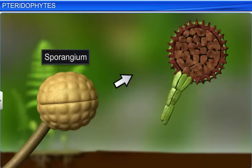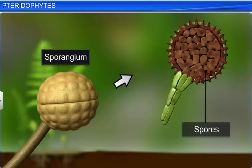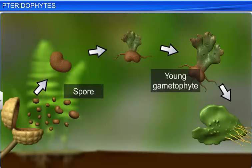The sporangia produce spores in spore mother cells by meiosis, which germinate into gametophytes called prothallus.